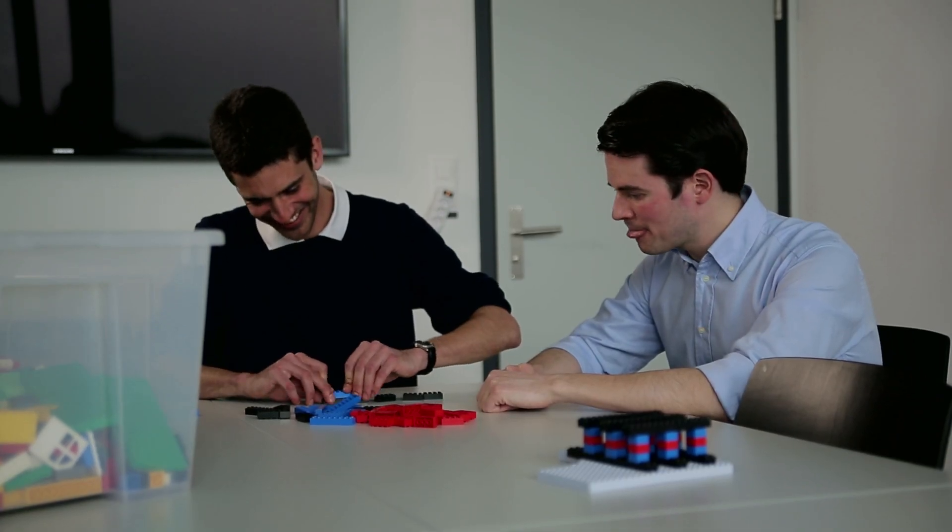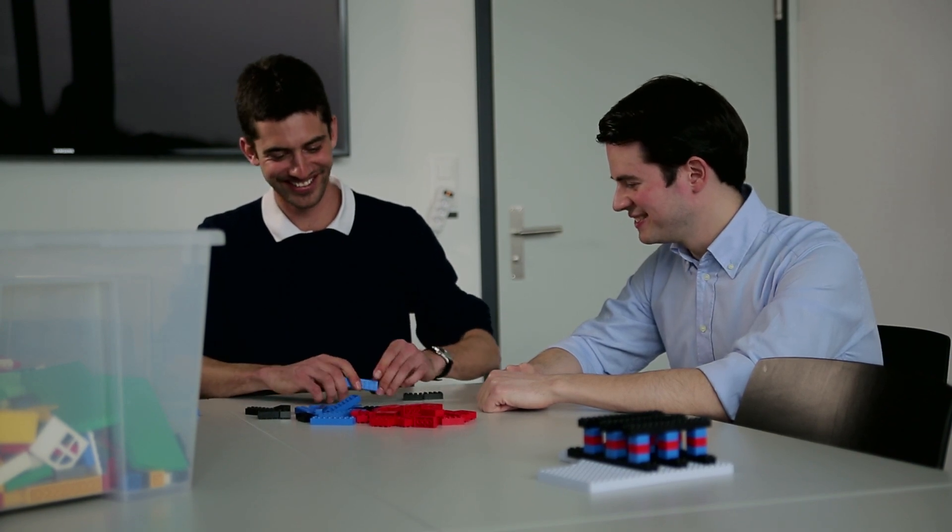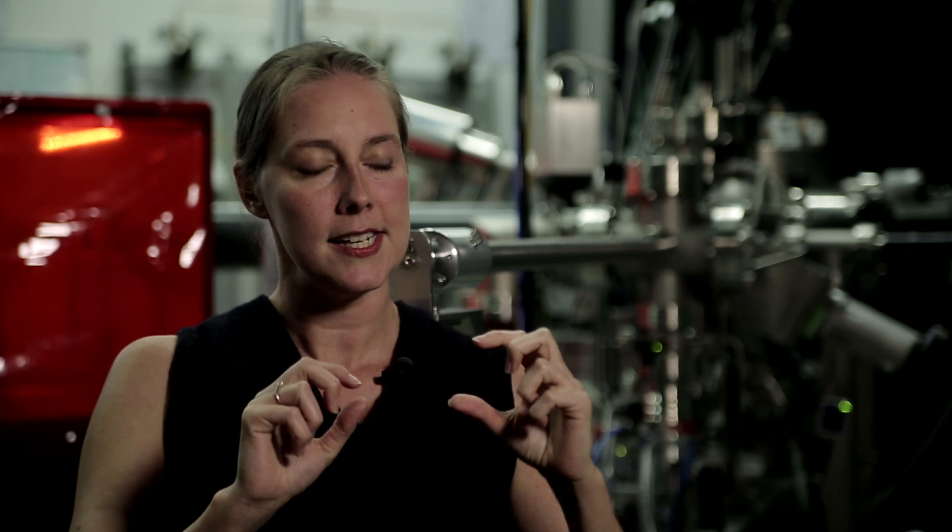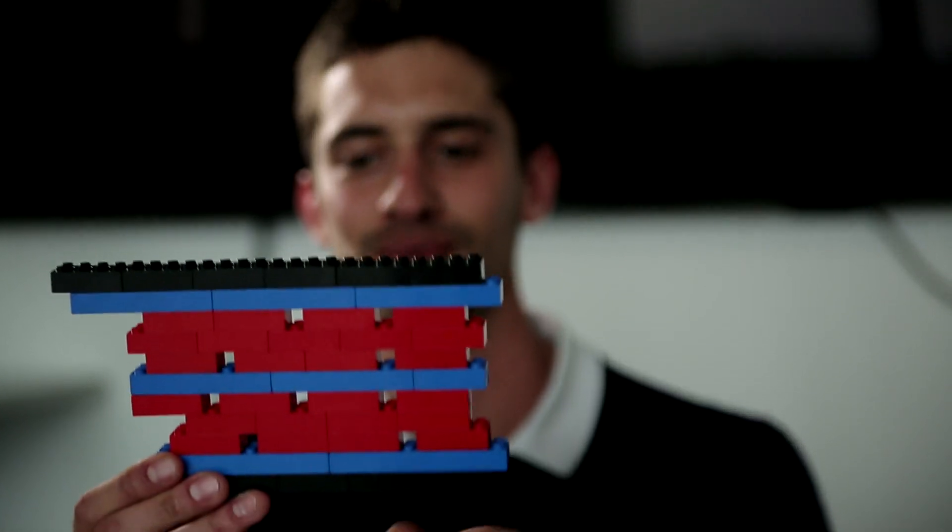We can construct a strained memristor element out of Lego. Here you can see the black cubes which represent the metal lines in our device, and we replace the conventional memristor oxide with two materials in blue and red.